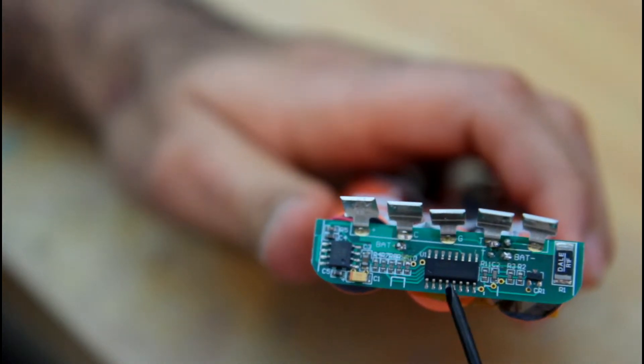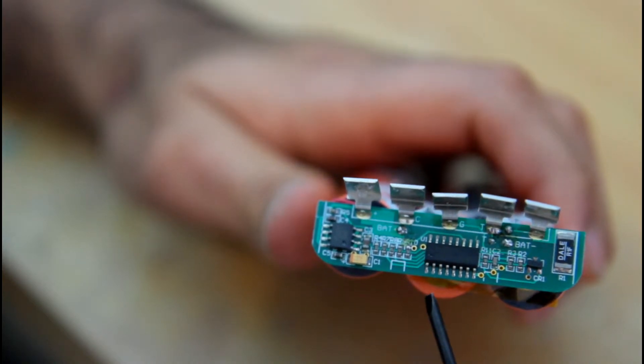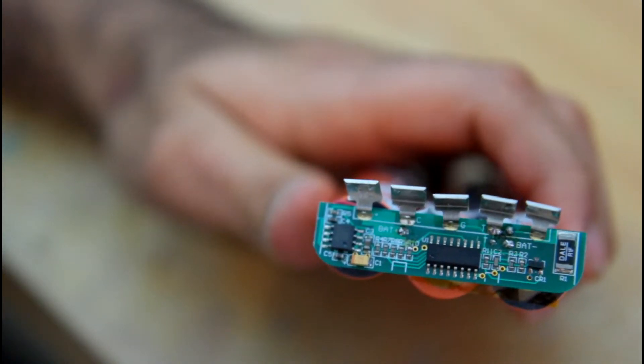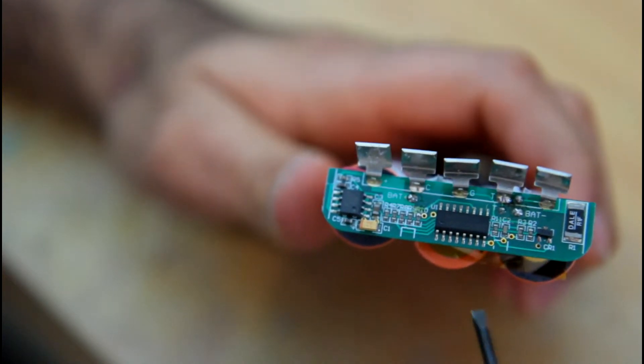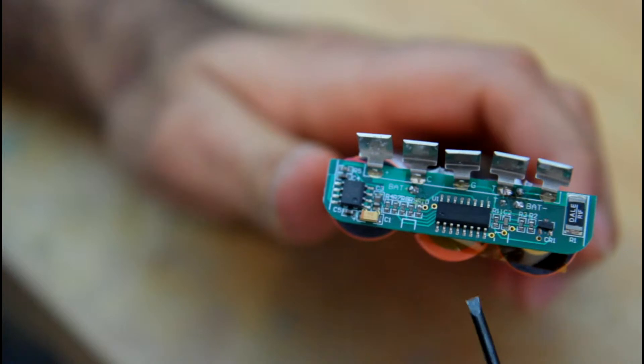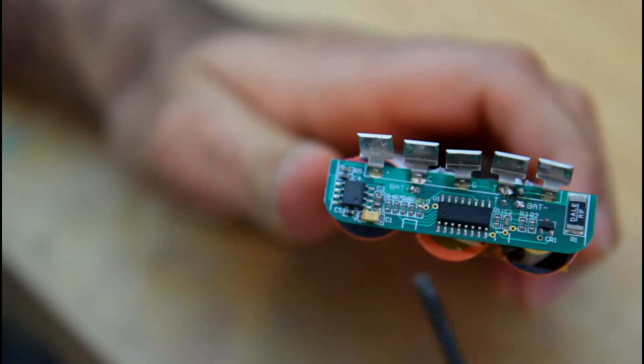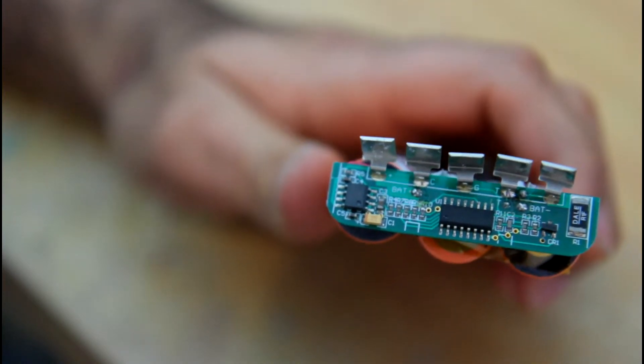But this is the actual brain of this battery pack and basically it is a gas gauge IC and also has a charge control in it. And the way it works is it monitors the voltage drop across these resistors, which are connected in series between the negative battery terminal and the ground.